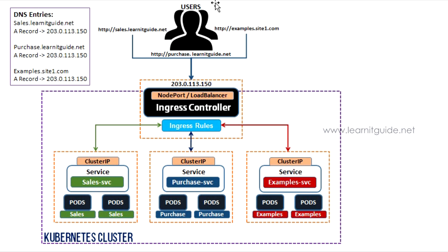What is Kubernetes Ingress? Kubernetes Ingress is a Kubernetes resource that allows access to your Kubernetes services from outside the Kubernetes cluster. It routes traffic using a collection of ingress rules, where you define which inbound connections should reach which target services.